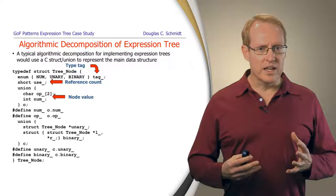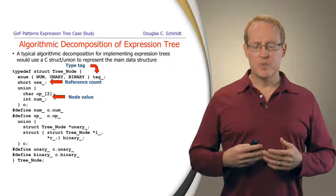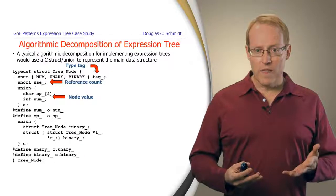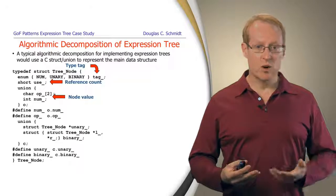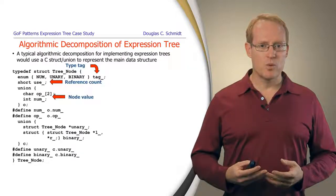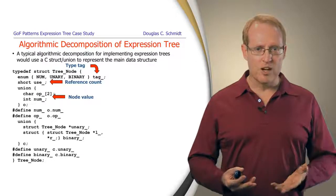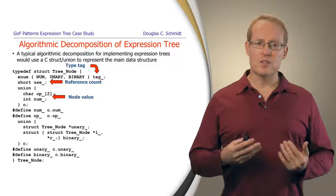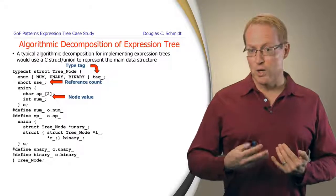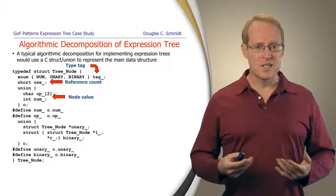You'll also see that we use a union to represent either the number, in case it's a number node or leaf node, or the operator, in the case in which it's a binary node or a unary node. And we use this as a union because a node can only be one or the other, not both, and this will help to conserve space.